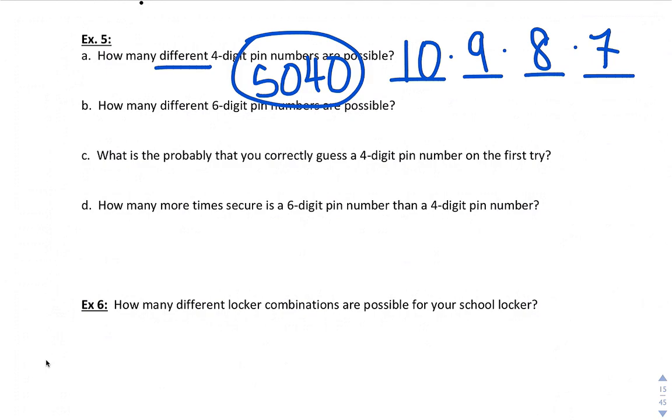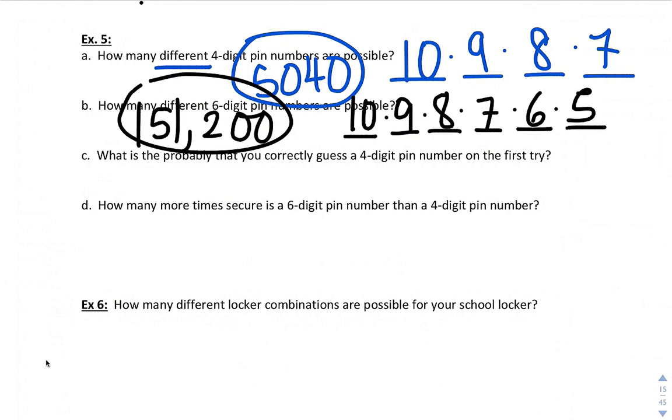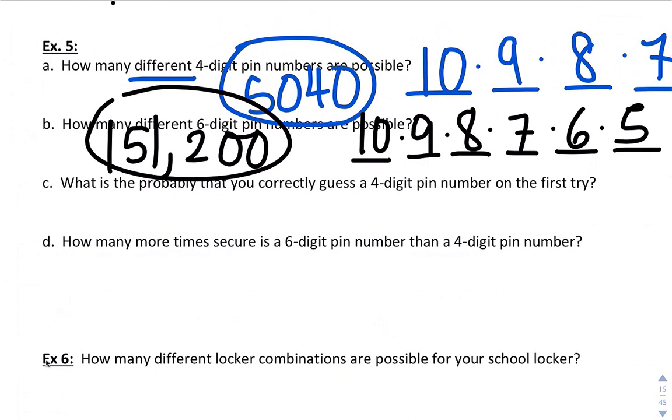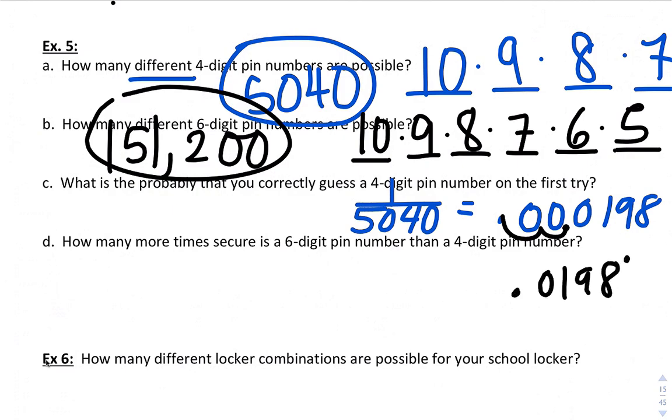Let's do the same thing for six-digit. Again, we're assuming you can't repeat digits. So we have 10 choices for the first, 9 for the second, 8, 7, 6, 5. We multiply that out. Again, assuming we can't repeat digits, 151,200 choices. What is the probability that you correctly guess a four-digit PIN number on the first try? Again, assuming that repetition was not allowed, one would be the right one out of 5,040. That becomes 0.000198. Change it to a percent, 0.0198 percent that you could guess someone's four-digit PIN number if numbers didn't repeat on the first try.